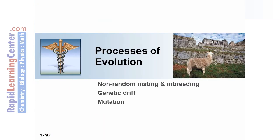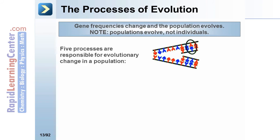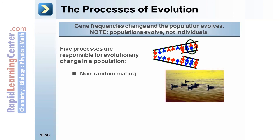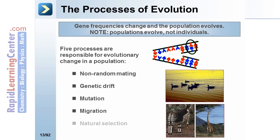In this segment we'll talk about nonrandom mating and inbreeding, genetic drift, and mutation. Gene frequencies change and the population evolves — note that populations evolve, not individuals. Five processes are responsible for evolutionary change in a population: nonrandom mating, genetic drift, mutation, migration, and natural selection.